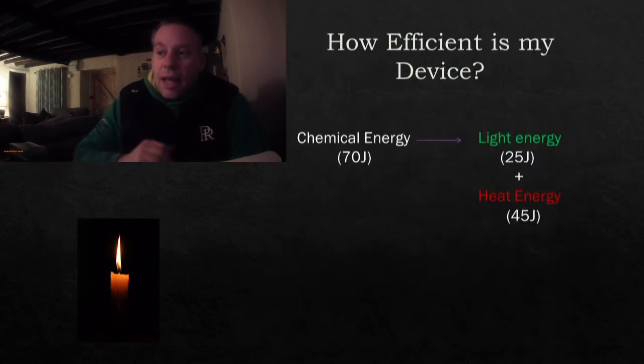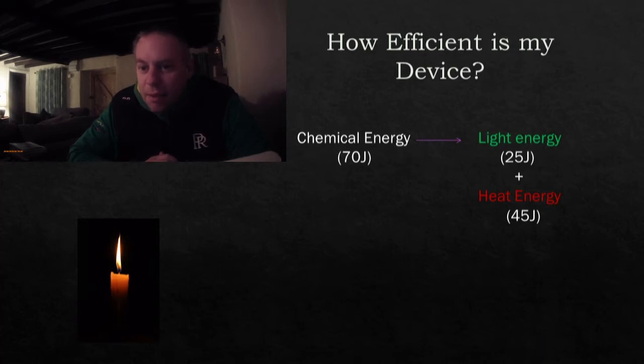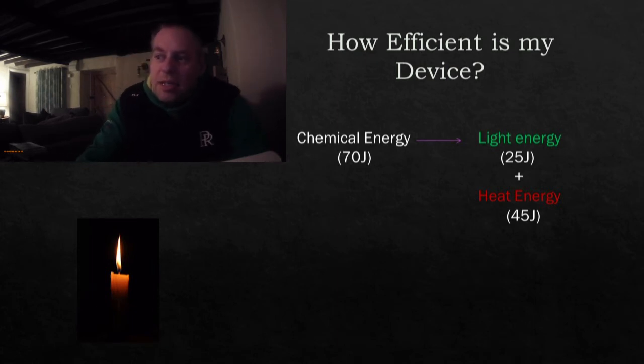So now you've done that, let's have a closer look at what's happening inside here and we're going to start putting some values on the energy that's there. So in this candle, these are just made up numbers, let's say my candle wax that's being burnt has an initial energy store of 70 joules. When I set fire to it and it releases the energy, it releases, and these are just random numbers, 25 joules in light energy and 45 joules in heat. You can see it releases more heat than it does light.